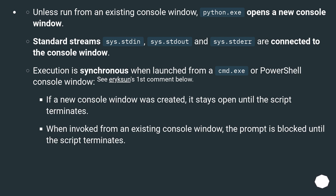Execution is synchronous when launched from a cmd.exe or PowerShell console window. If a new console window was created, it stays open until the script terminates. When invoked from an existing console window, the prompt is blocked until the script terminates.